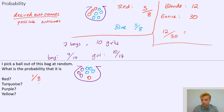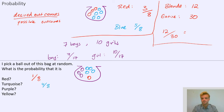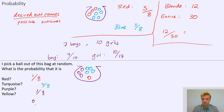The probability that it's turquoise: there are four turquoise balls out of eight. So it's four eighths. The probability that I pick a purple is three — there are three purple out of eight. The probability that it's yellow: there are no yellows, so it's zero eighths, which is the same as zero. The probability is zero, which means it's impossible.